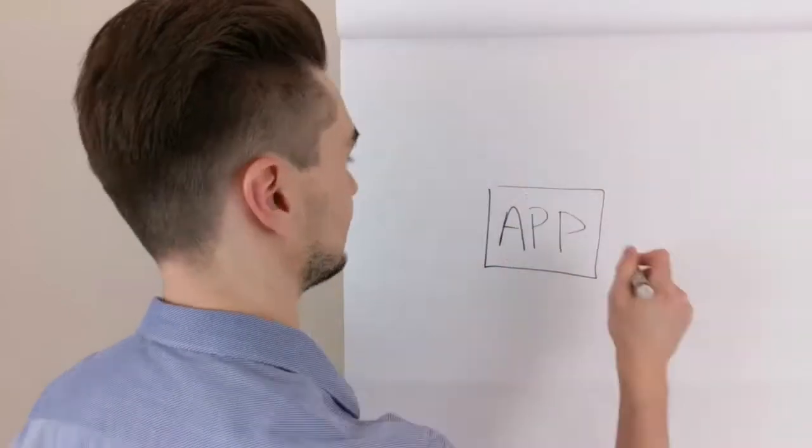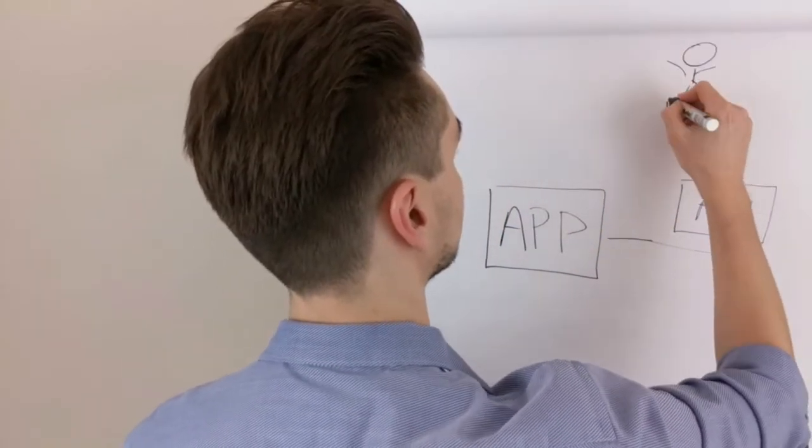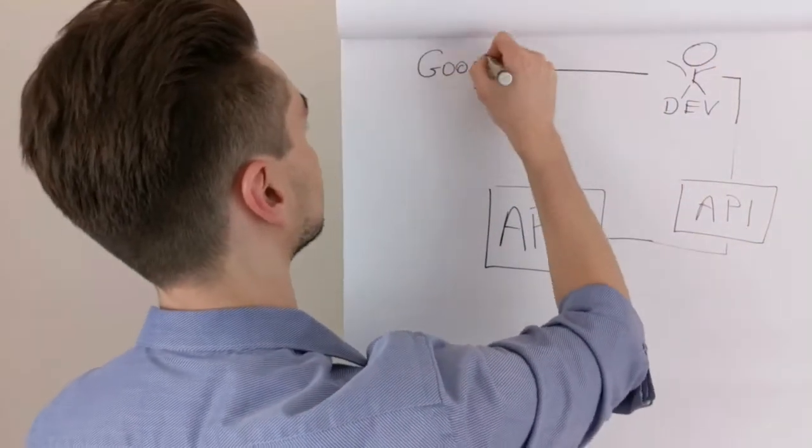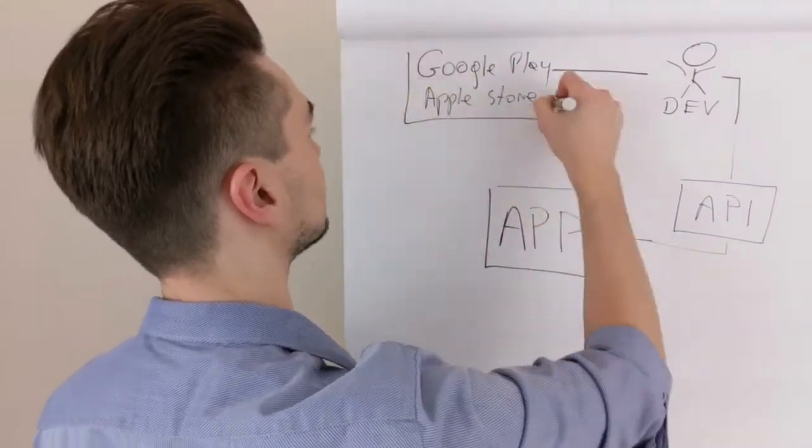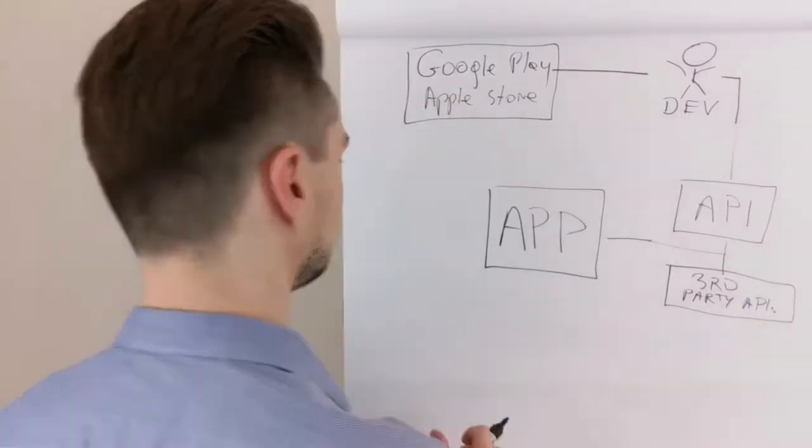Before we secure a mobile application, let's have a look at what we have. Your application talks with your server-side API, which is written by the developer who has the permission to push new application packages to Google Play and Apple Store. There are also some third-party advertisement and tracking APIs.